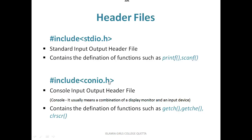Second is conio.h. conio stands for the console input-output header file. Here we have some other input-output functions. The console usually means the combination of a display monitor and input device. If we are using functions like getch, getche, and clrscr, then we have to include the conio.h header file in our program.